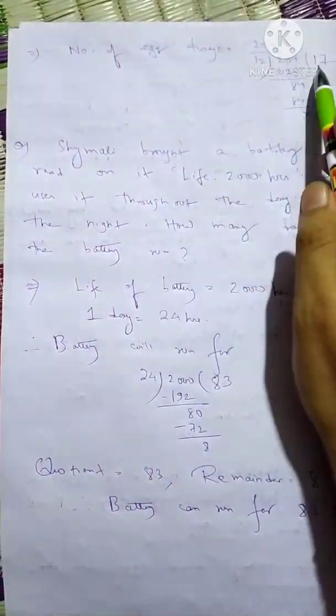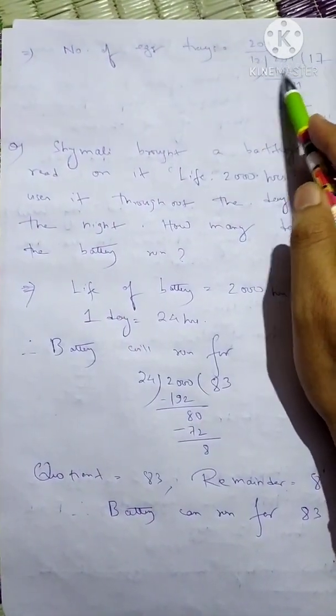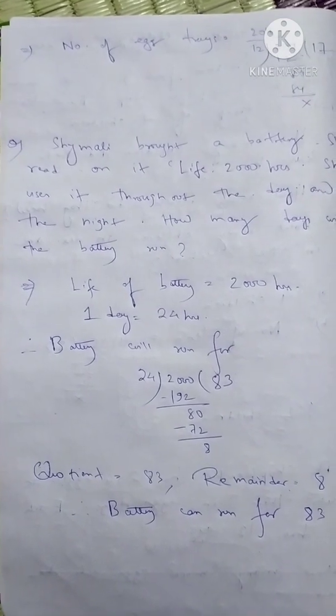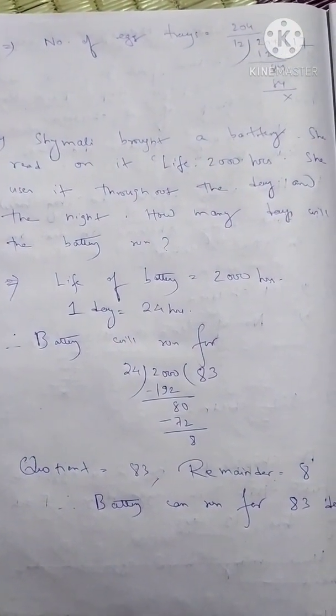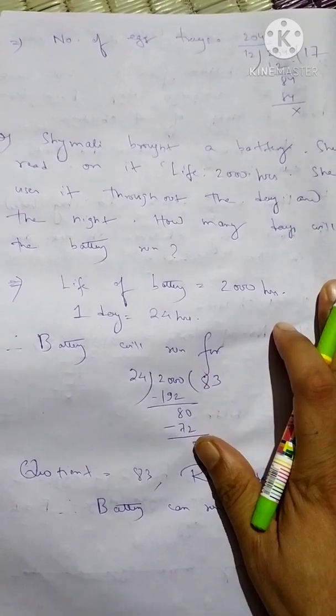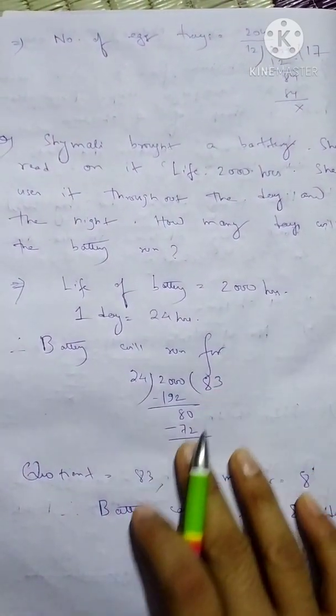The number of egg trays = 204 divided by 12. If we divide, the answer comes to 17. So the number of trays needed is 17.